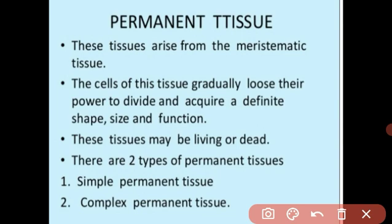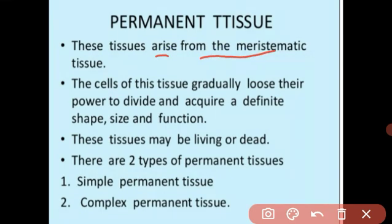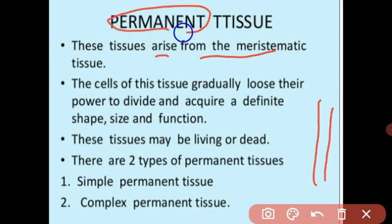In this video I am going to teach you permanent tissue. Permanent tissue arises from meristematic tissue. Meristematic tissue is a dividing tissue. When the meristematic tissue matures, they lose their ability to divide and they perform a particular function. This tissue is called permanent tissue.